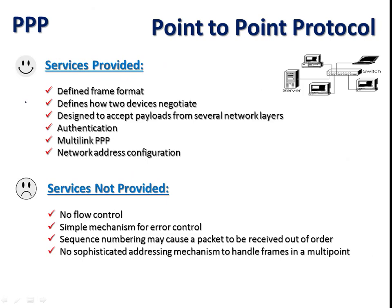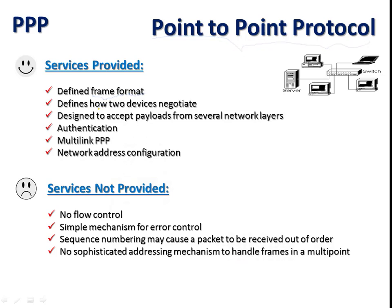The services provided in Point-to-Point Protocol include a defined frame format. The frame contains data collected from the network layer, information about the sender and receiver, and other controlling information. It also defines how two devices negotiate — how connections are established and what kind of data transfer between two points is accepted, including user data with different payloads from several network layers.